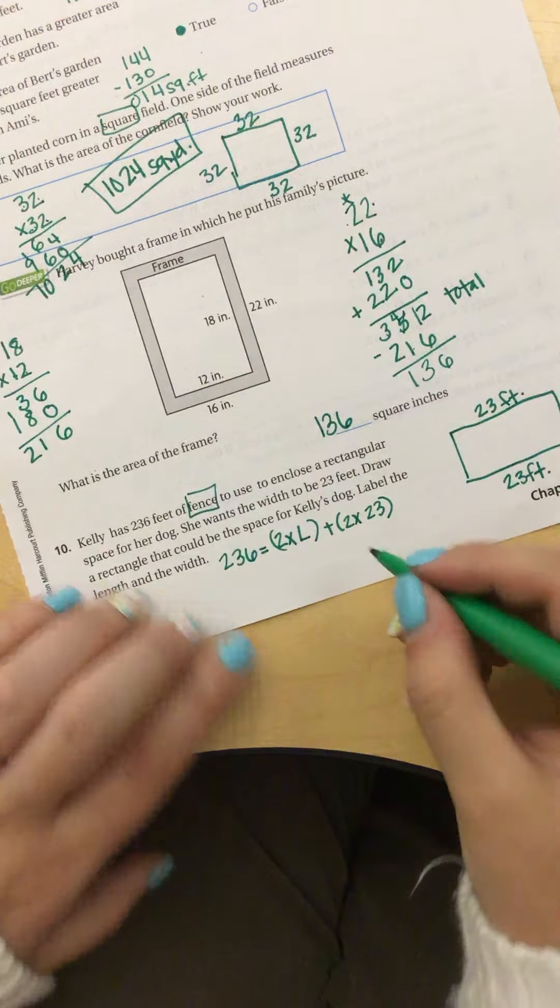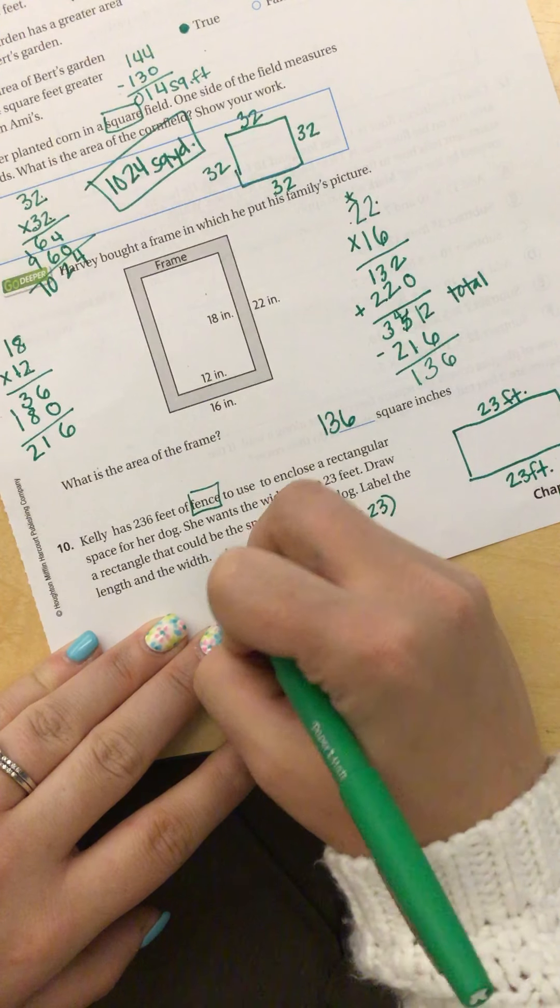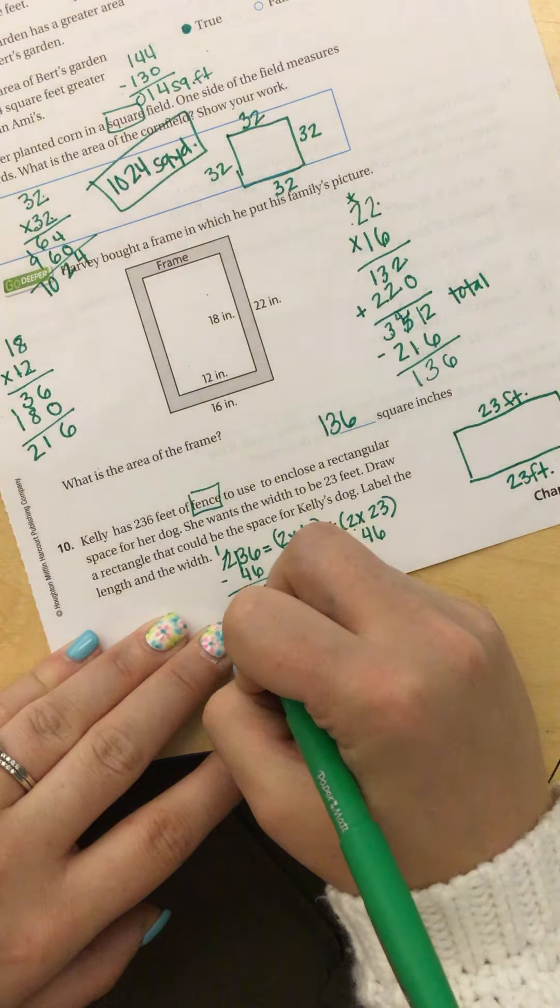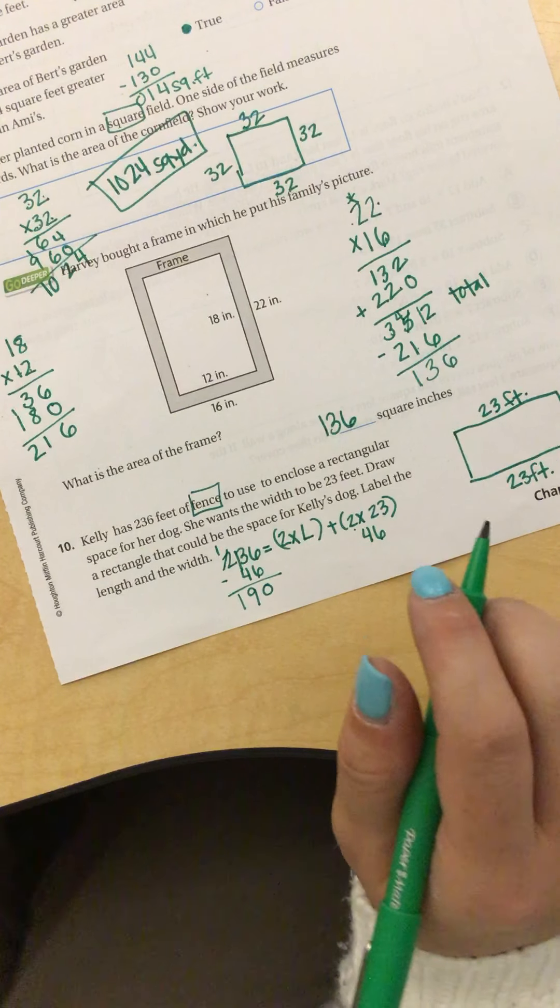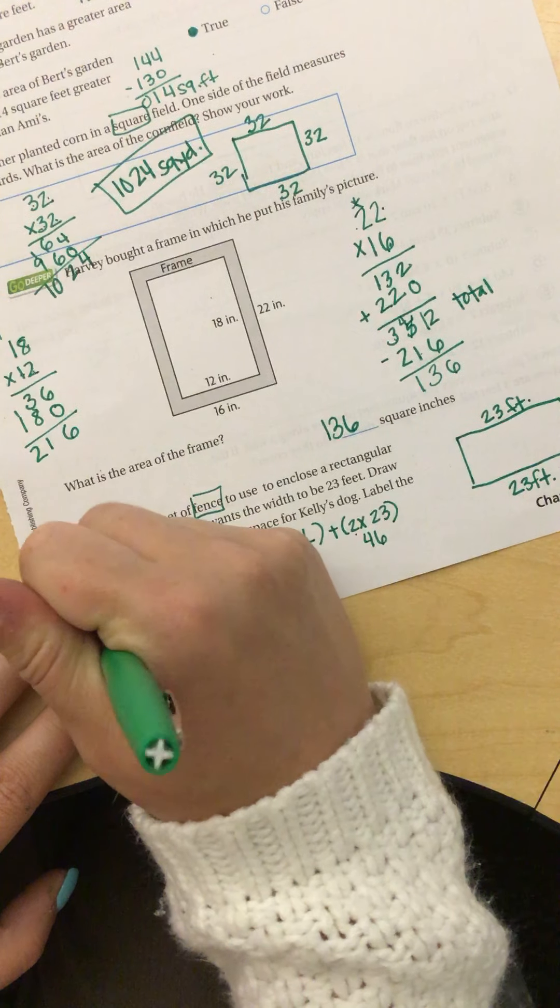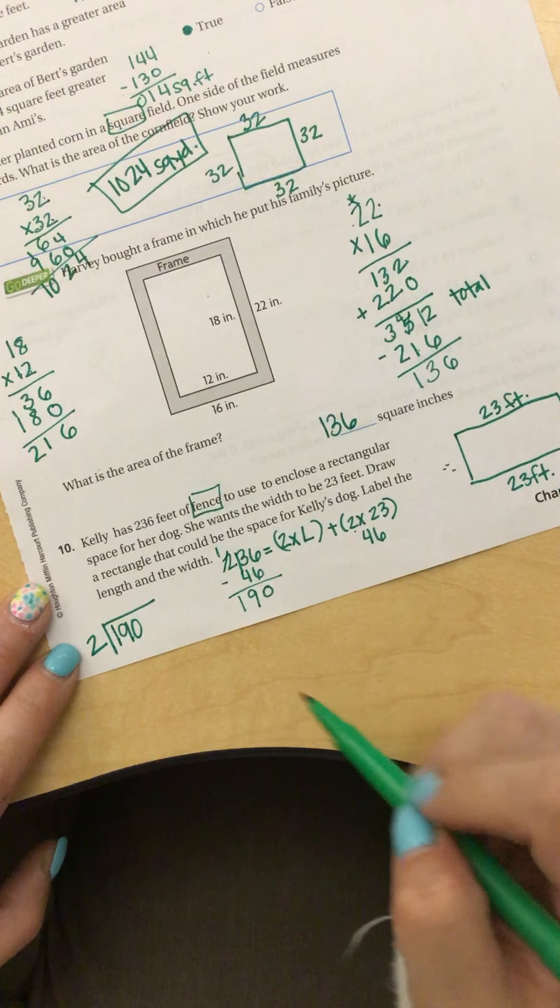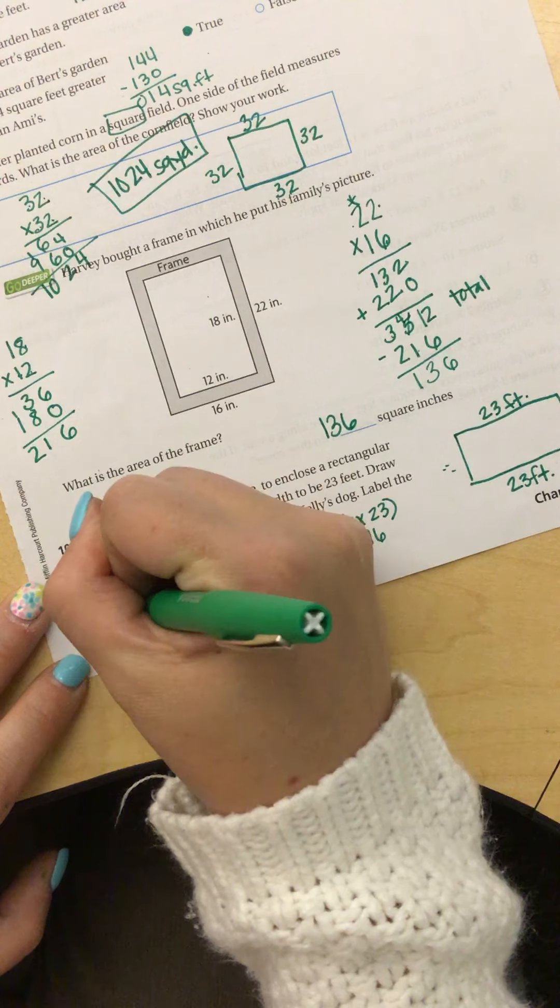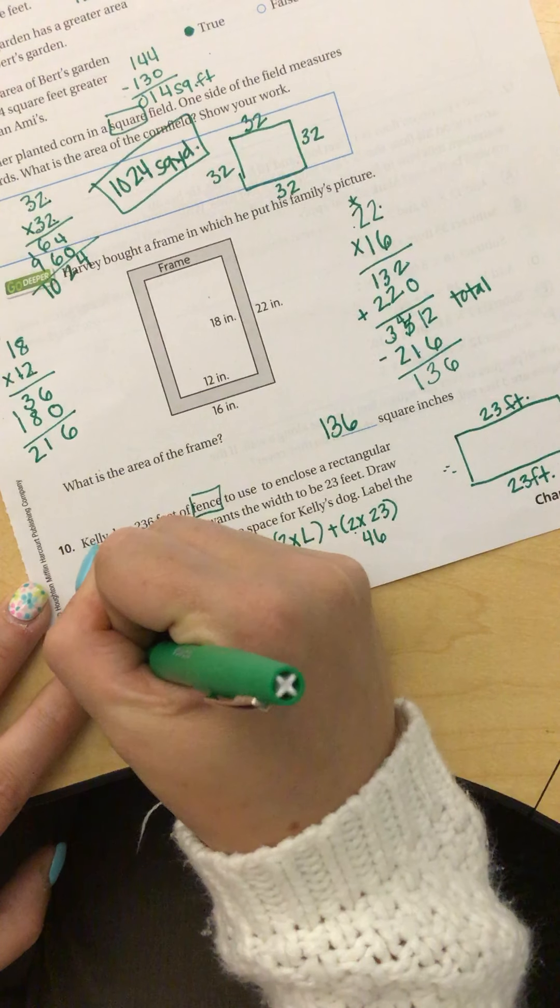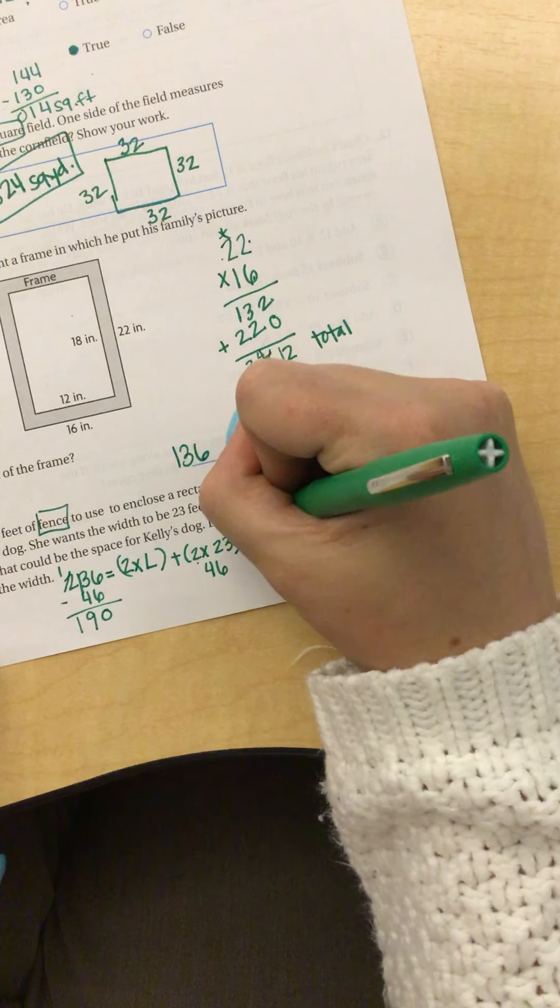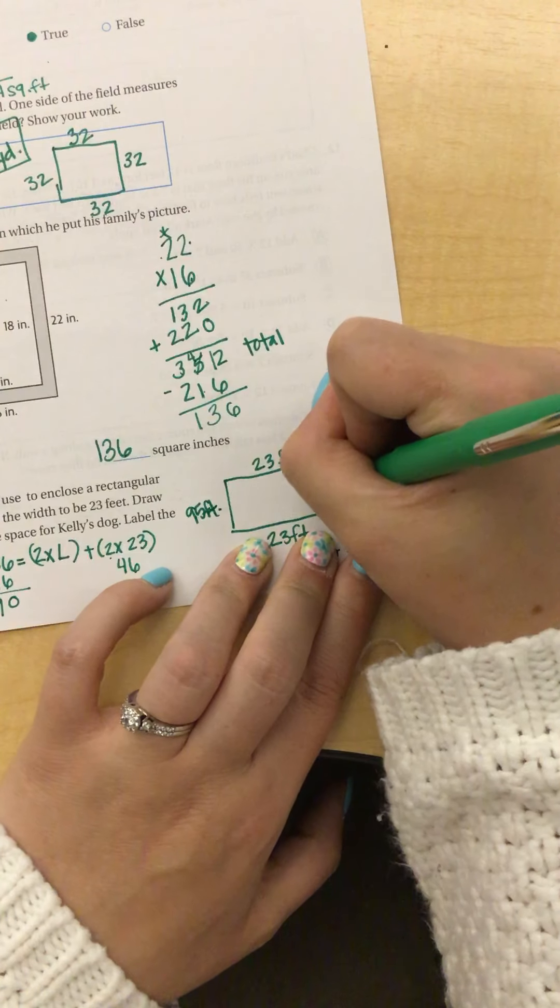So I'm going to do 2 times 23 is 46. So I'm going to subtract 46. So that's 190. And then I know that I'm going to divide this by 2. So 190 divided by 2. The reason I do that is because that's going to give me the other side. So 2 goes into 19 nine times with 18, I have 1 left over. 2 goes into 10 five times. So that means that my length is 95 feet.